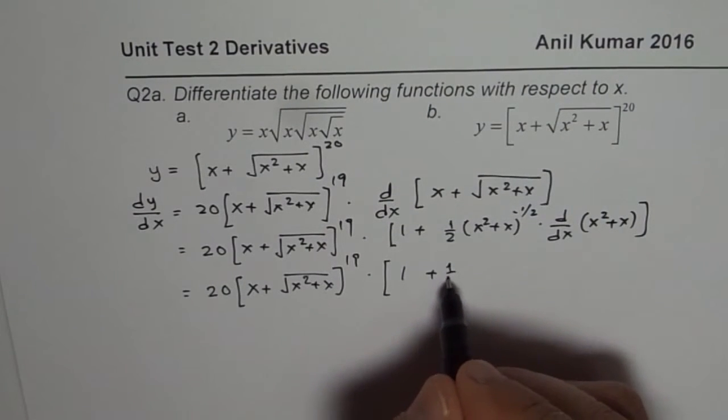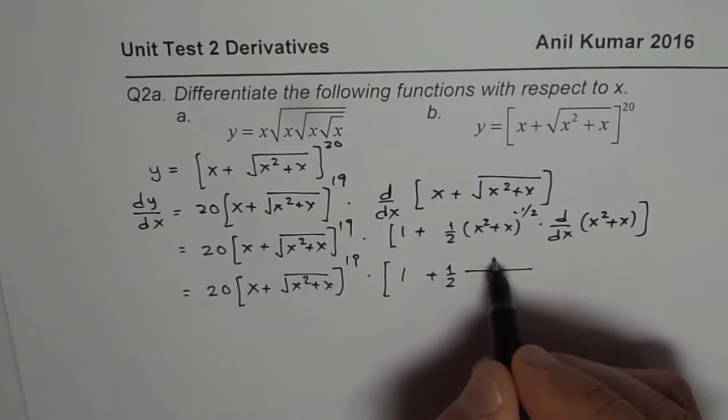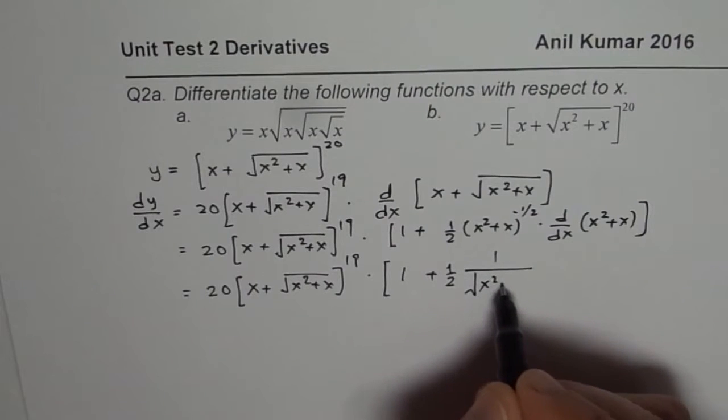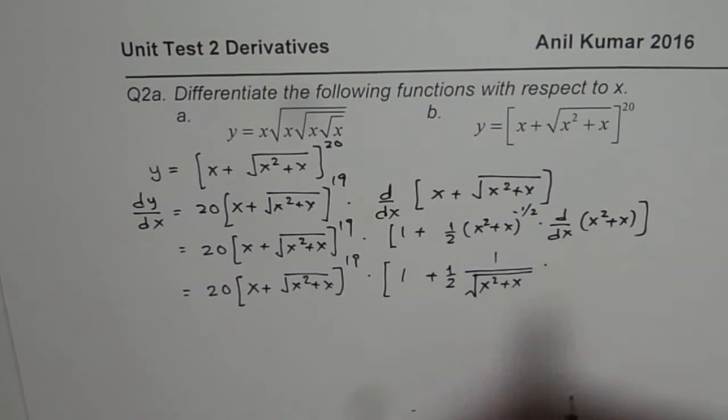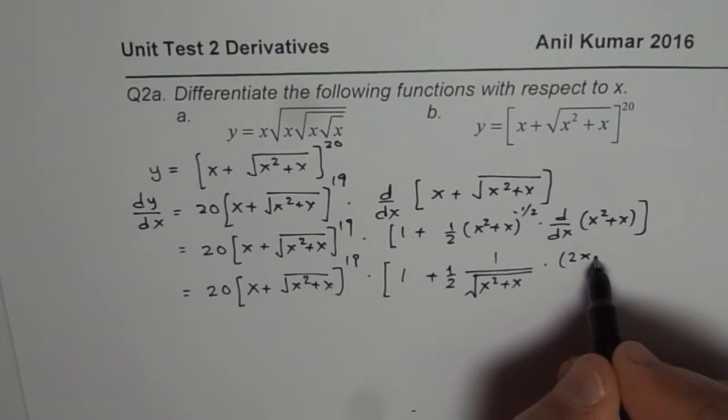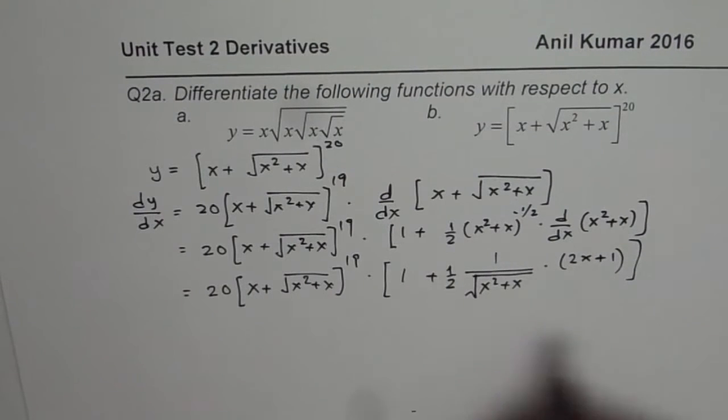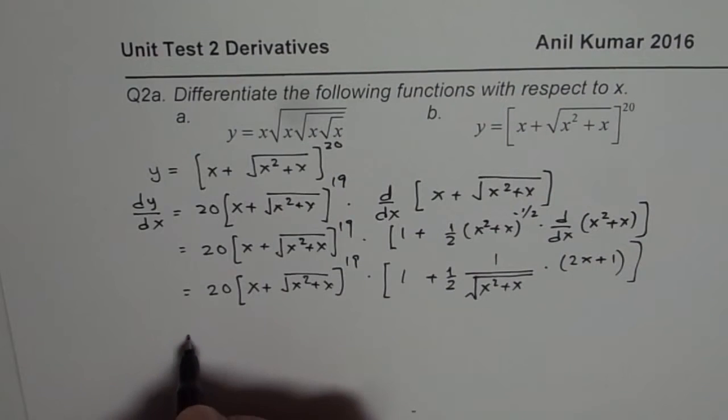So here we have half and that is 1 over square root of x squared plus x times 2x plus 1. So now we have differentiated the function completely. So you can now write down your answer.